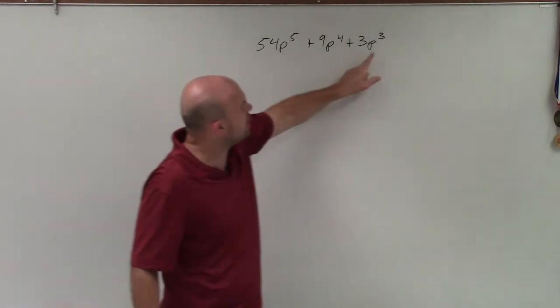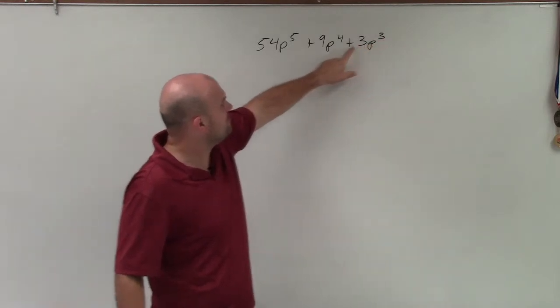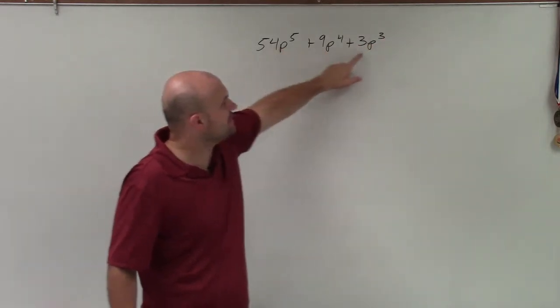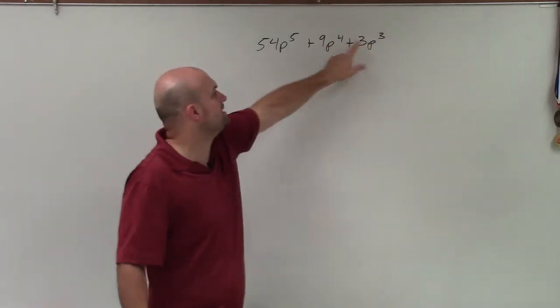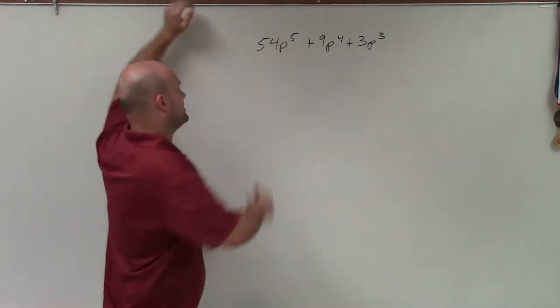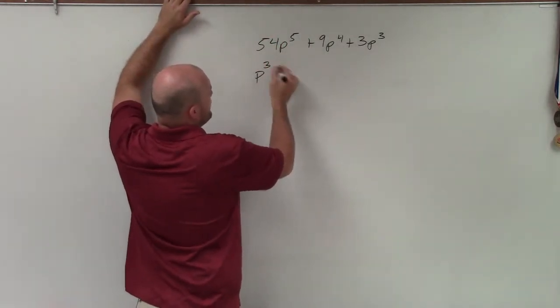So I look at this and say, all right, what is the largest exponent of my base p that I can subtract from each one of these? And the largest one would be p to the 3. So when I factor out p to the third power, I'm left with...